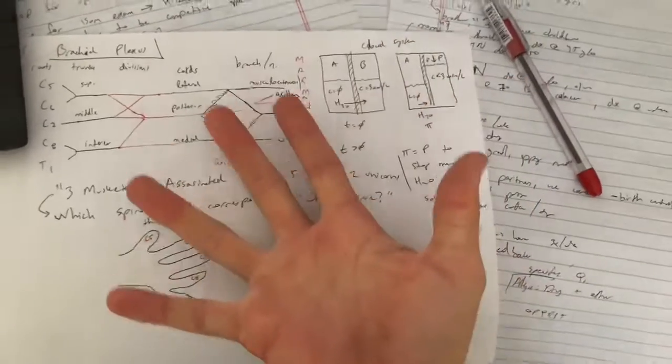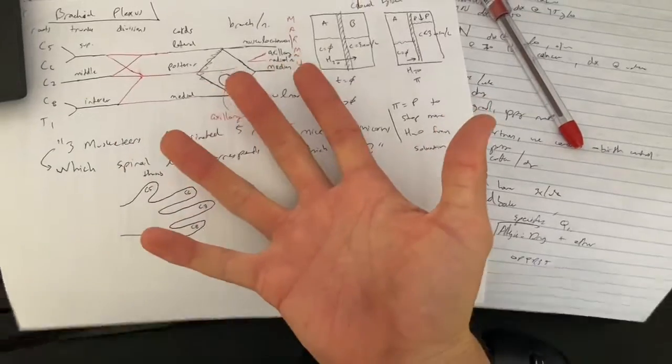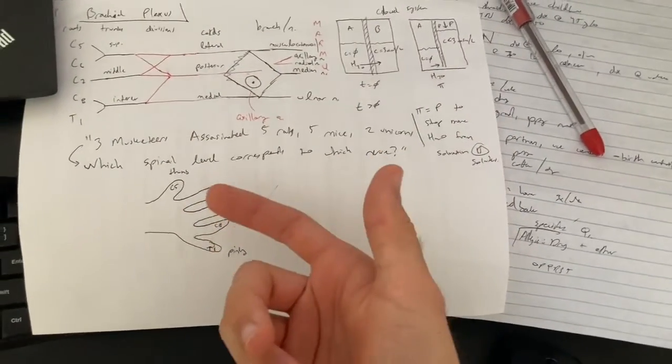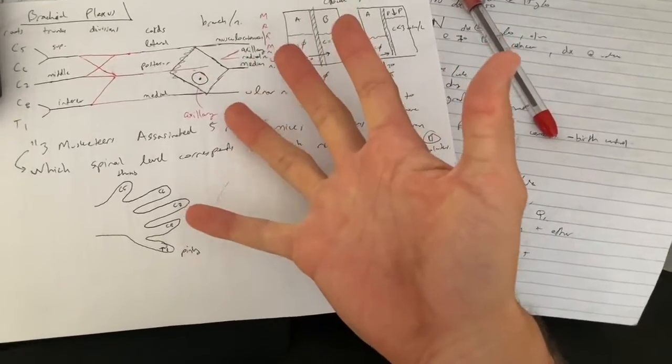Then five rats means that the radial nerve comes from all five of your fingers or all five of the spinal levels that make up the brachial plexus, which is C5, C6, C7, C8, and T1.